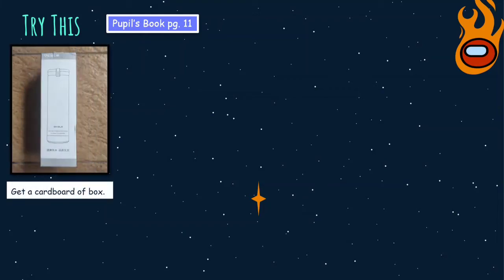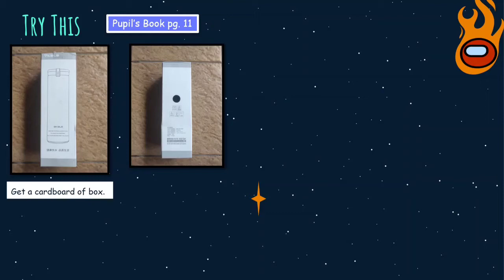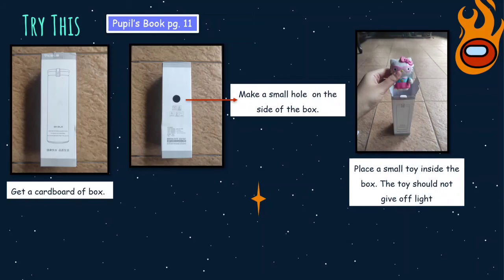The first one, get a cardboard box. And then the second, you make a small hole on the side of the box. Next, place a small toy inside the box. The toy should not give off light, remember.